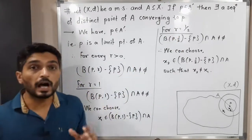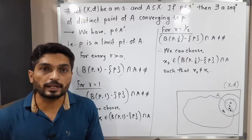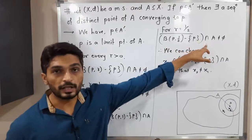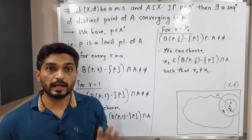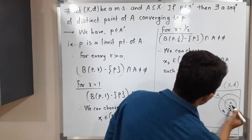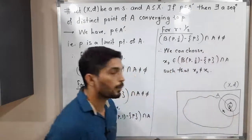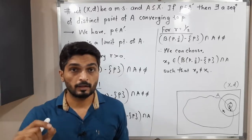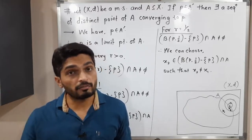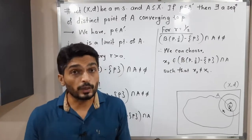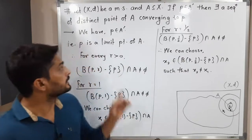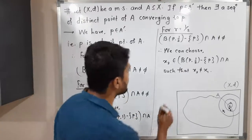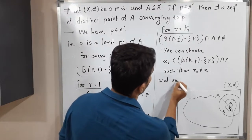Similarly for r equal to 1/3: B(p, 1/3) minus {p} intersected with A is not empty. Again we consider a ball with center p and radius 1/3 — a smaller ball — but the intersection with A is still non-empty. So we can find a point x₃ from that intersection which is different from x₁ and x₂, and so on.